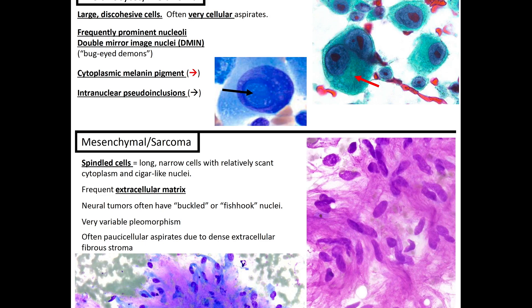Moving on to melanoma: melanocytes are large discohesive cells, and melanoma is often a very cellular aspirate. They frequently have prominent nucleoli or double mirror-image nuclei — 'demon eyes' or 'bug-eyed demons' — you can see what might look like demon eyes here. If you see that, start thinking potentially melanoma. The red arrow points to cytoplasmic melanin pigment, and the black arrow points to intranuclear pseudo inclusions, which we'll discuss shortly.